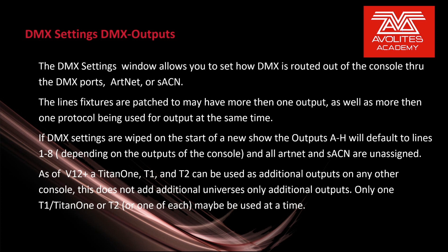If DMX settings are wiped on the start of a new show, outputs A through H will default to lines one through eight, depending on the outputs of the console, and all Art-Net and streaming ACN lines are unassigned. As of version 12 plus, a Titan 1, T1, and T2 can be used as additional outputs on any other console. This does not add additional universes, only additional outputs. Only one T1 or Titan 1, or T2, or one of each, may be used at a time.